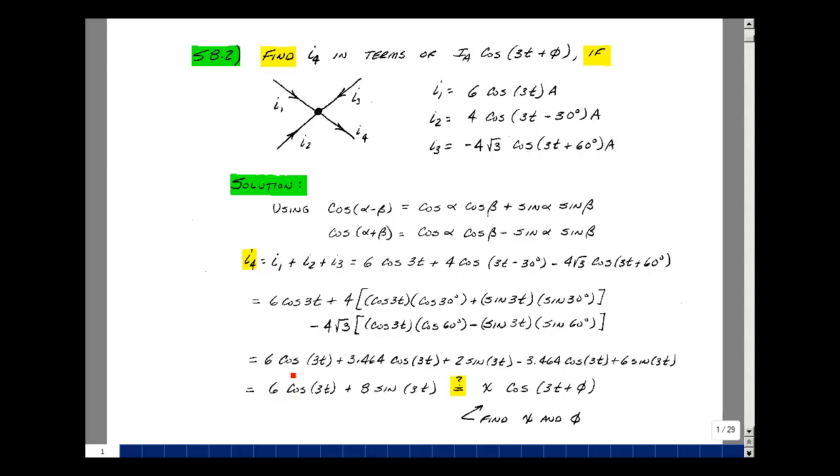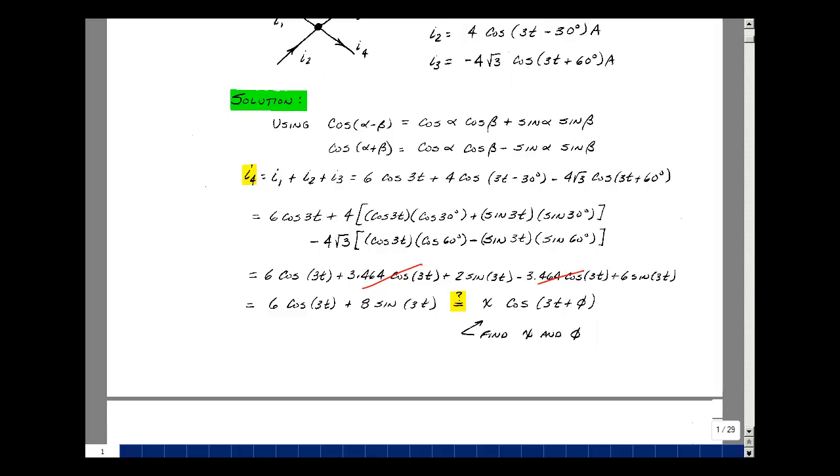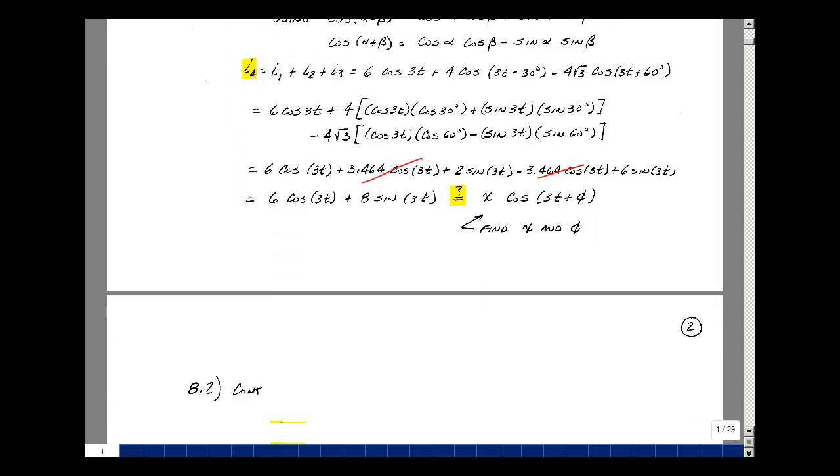Combine terms. I've got cosine of 3t times 6, but then I have two terms that are the opposite sign, so they'll cancel. Left with the sine terms which is 6 and 2 are 8. I want to express this as a single cosine function, so I need to set this equal to some magnitude with some angle. I really have two unknowns: x and phi.